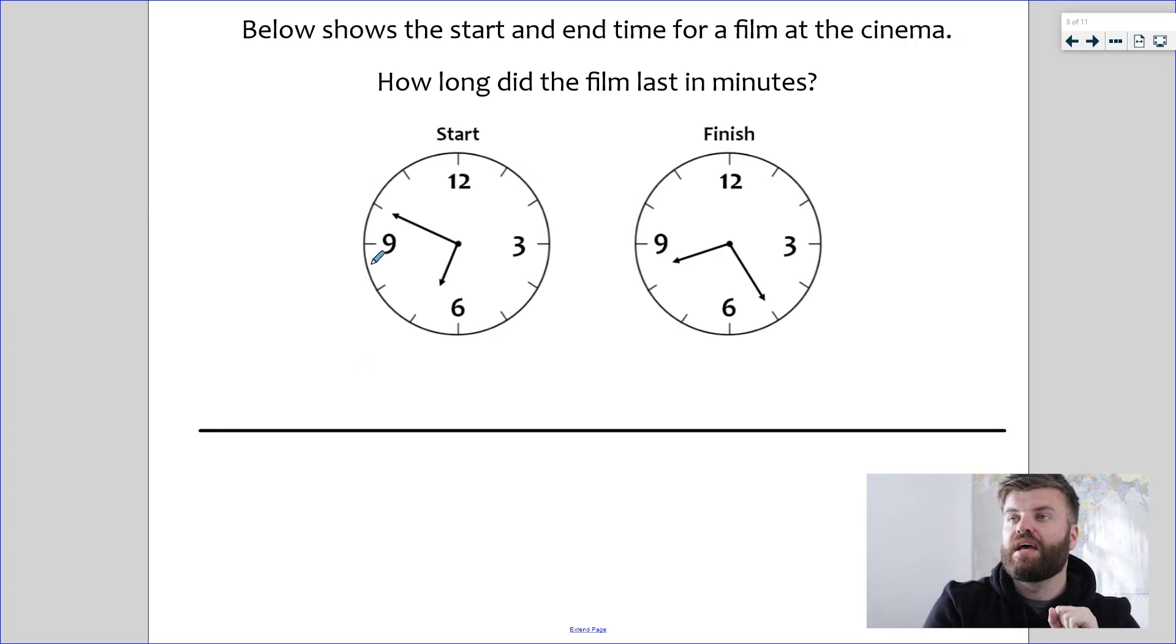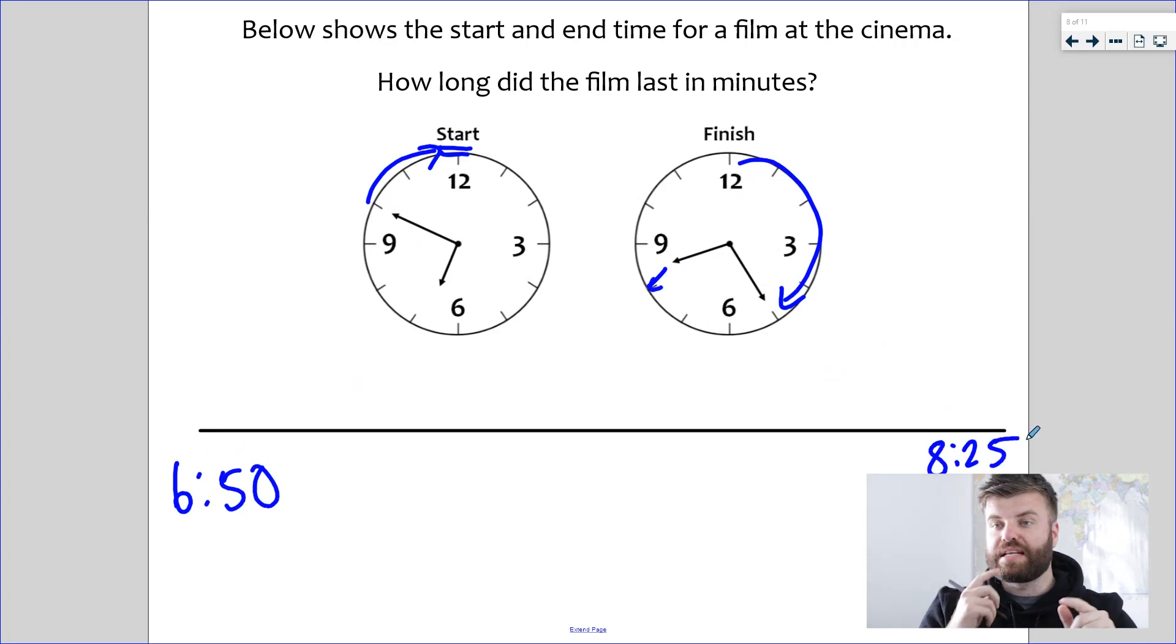Ah, so just seeing that timeline makes me relax because I know I'm going to get this right every single time. The only thing you will have to do if you're working with an analog clock is just convert it into digital. So you do have to know how to read time, something to practice if you find tricky. The start time here, I can see that is 10 minutes to seven. So that's the same as 6:50. And then the finish time, I can see that is 25 minutes past. This would be eight. So I'm going to put 8:25.